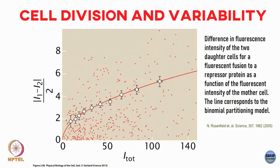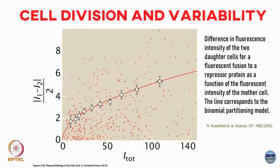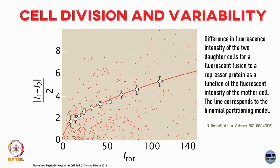For this particular protein, the variability comes because of division, which is why you get reasonably nice agreement with the binomial partitioning model. The message is: even though the problem looks complicated, you could try very simple, naive modeling approaches. They may not work for every protein, but for some cases even simplistic modeling might give a reasonable fit to experimental data. After all, the binomial distribution is something we know from school. That is one source of variability - you can think about what other sources there could be.